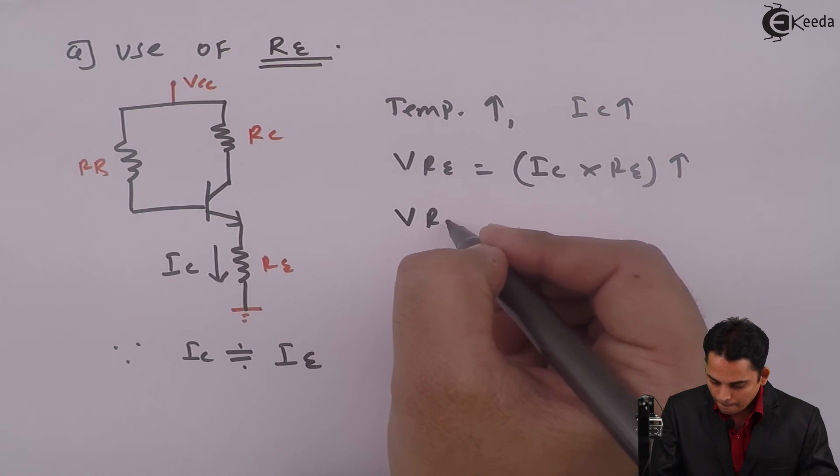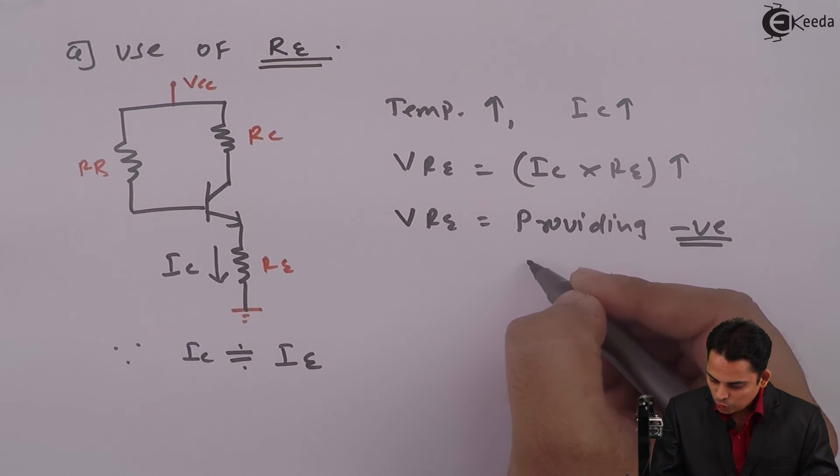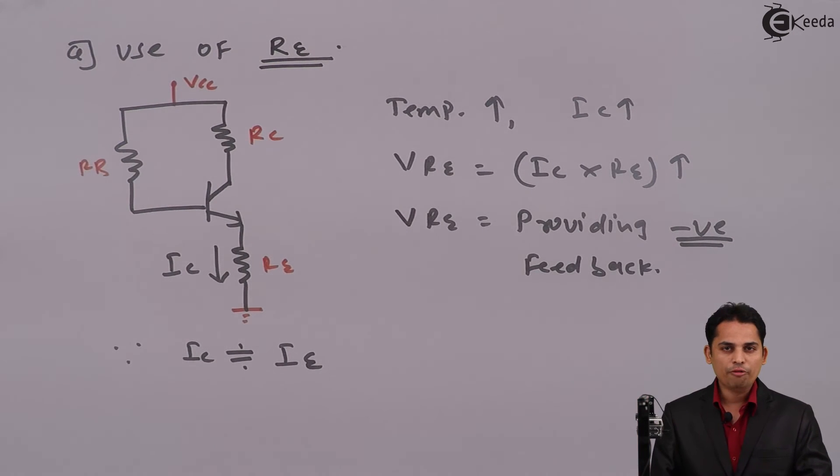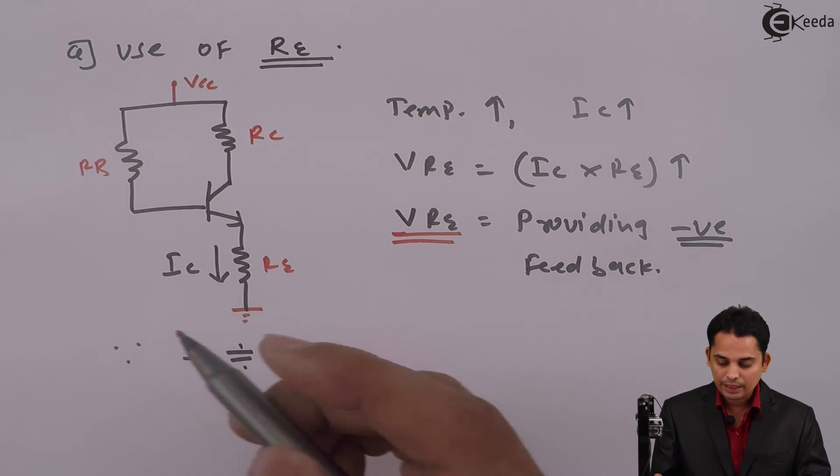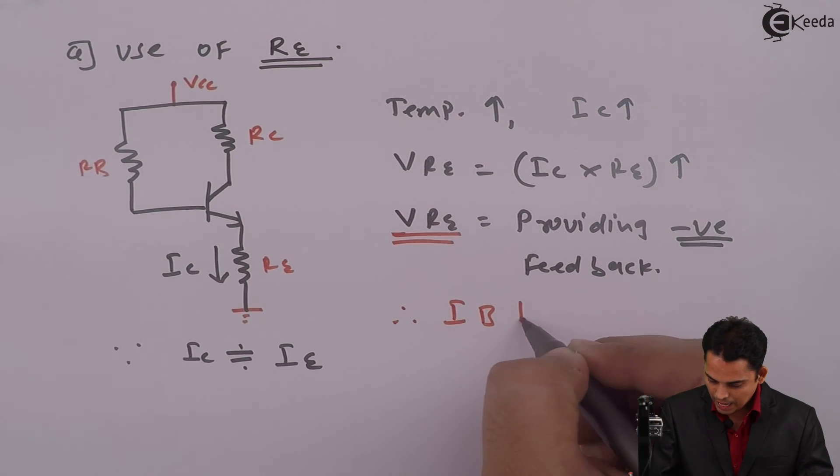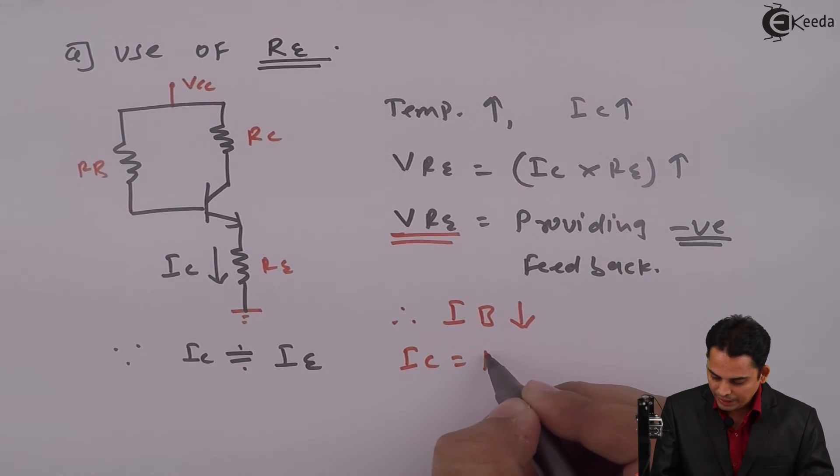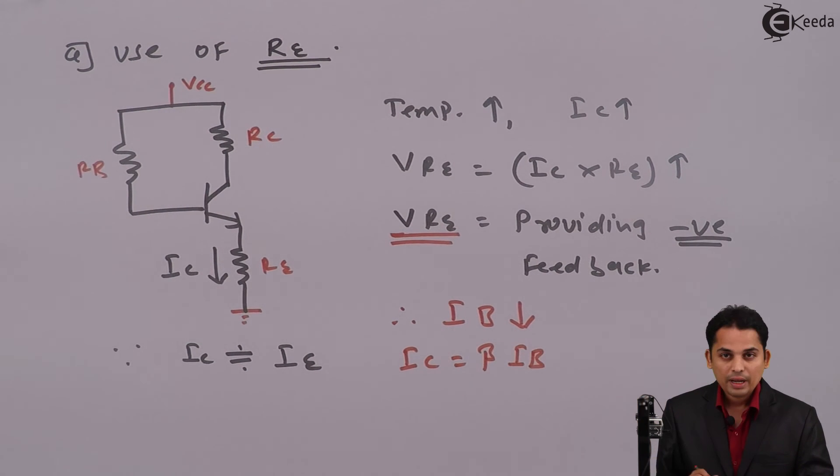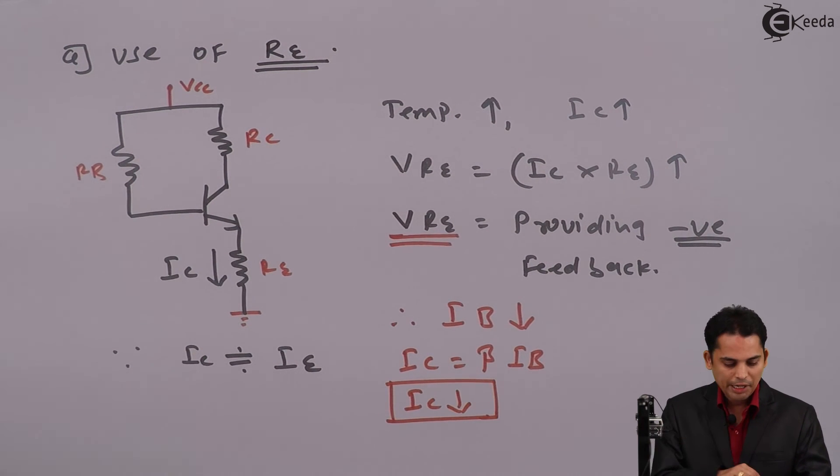This VRE is providing negative feedback, because of which IB decreases. This is a very important statement: as VRE is providing negative feedback, the input current IB decreases. We know that IC is beta times IB, and hence if IB decreases, IC will decrease.